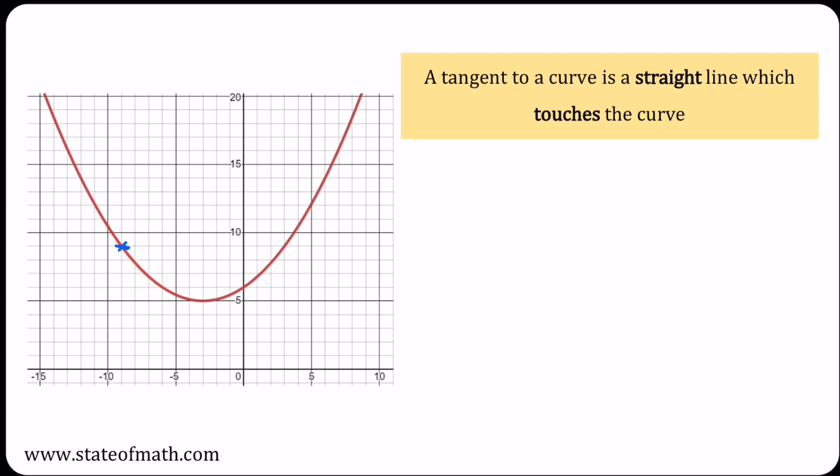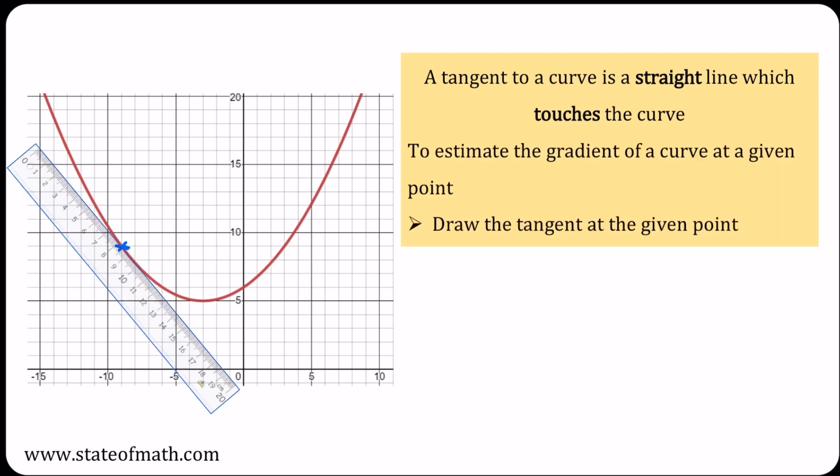The first thing to do is draw the tangent at the given point. We take our ruler, place it close to the point, and rotate it so it just touches upon the point. A rule of thumb says that we look for equal angles with the curve on either side of the point of interest, and then drawing the straight line means we're interested in finding the gradient of this straight line here.